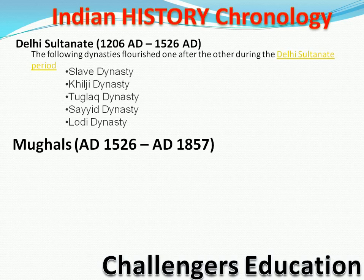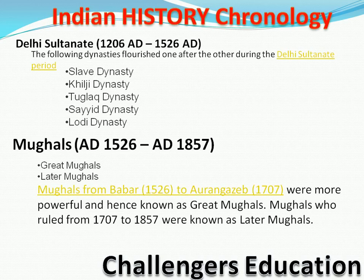Uske baad hoga Mughals ka rise. Mughals mein do parts honge — Great Mughals aur Later Mughals. Great Mughals woh hain jo achhe shasak the, jaise Babur, Humayun, Akbar, Jahangir, Shah Jahan, aur Aurangzeb. Yeh kuch rulers hain jo 1526 se lekar 1707 tak achhe shasak the.